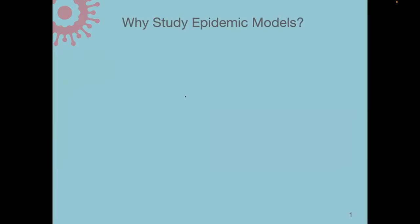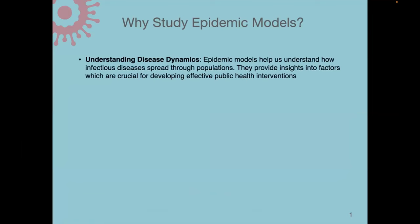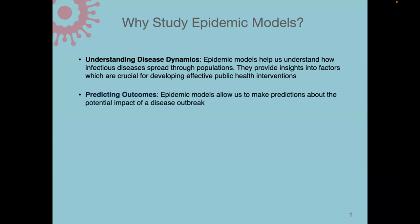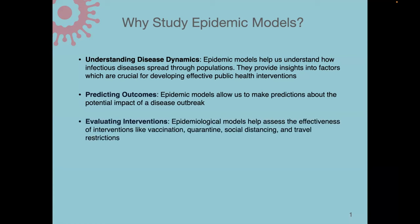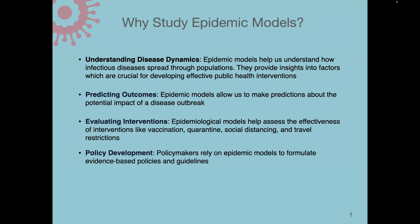First I want to talk about why we study epidemic models. Epidemic models help us understand how infectious diseases spread through a society, and they provide insights about different factors that are crucial for developing effective public health interventions. They also allow us to make predictions about the potential impact of a pandemic and help assess the effectiveness of interventions like vaccination, social distancing, travel restrictions, and other preventions. Policy makers rely on epidemic models to formulate evidence-based policies and guidelines.